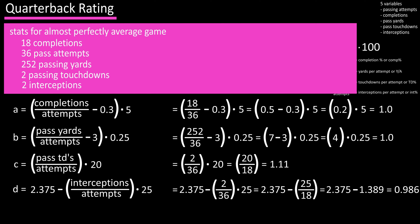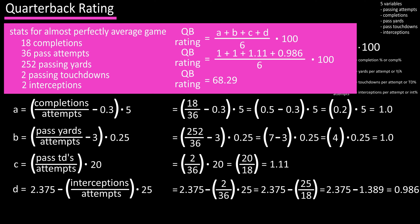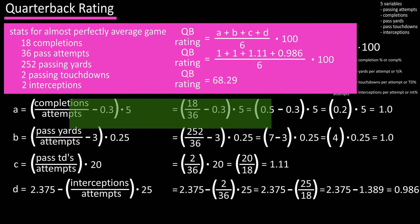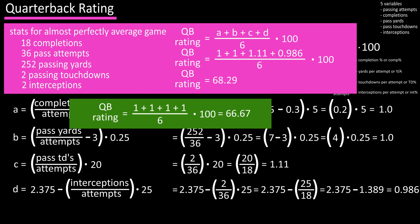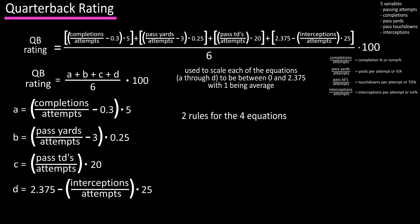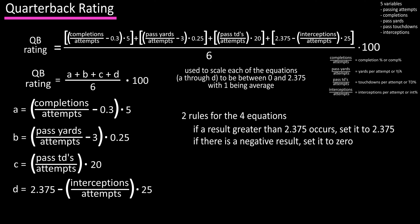All those calculations result in a passer rating of 68.29. If we plug in 1.0 for all variables in the main equation, the result is 66.67, representing a completely average performance. There are two rules regarding these four equations: if any equation results in a number greater than 2.375, it's set to 2.375, and if it results in a negative number, it's set to zero.